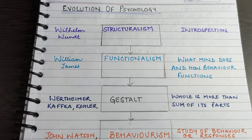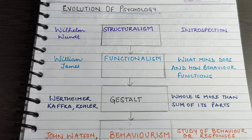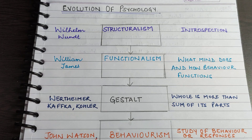Coming to the second school of thought, which is functionalism. It is an approach to psychology developed by American psychologist William James. Functionalists emphasized on what the mind does and how behavior functions. According to them, consciousness — unlike structuralism — is an ongoing mental process; you cannot break it down into parts. They also used introspection as a method, but they focused on what the mind does and how behavior functions. That is why the name functionalism.